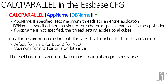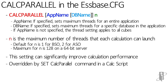If you put a Calc Parallel setting in the S-Space CFG file, it can be overridden by the Set Calc Parallel command in a Calc script. So don't think that this setting you're putting in is always going to take effect — it might very well be overridden. Where you would want to put it in the CFG is if you wanted it to be the standard for the whole server, an application, or a database, knowing full well that an individual Calc script can overwrite it.